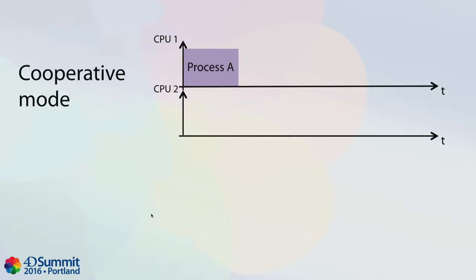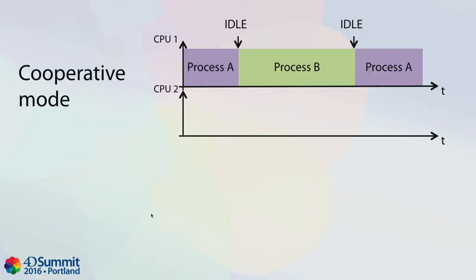Just to summarize: in cooperative mode, you have a 4D process executing. Then at some point, you call the idle command or some other 4D language command. At this point, process A stops execution and gives the CPU to another process — process B, for example. Then process B calls the idle command and in turn, process A resumes and can execute again. You can see that only one CPU is used, and CPU number 2, if you have a second CPU, is doing nothing.